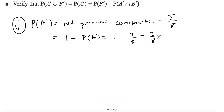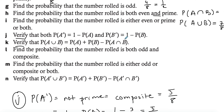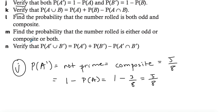I'd encourage you to use the same process for P(B prime). B prime means an odd number, so take the answer we found above — four over eight — and verify that one minus P(B) gives the same result. One minus the probability of an event should give you the probability of its complement.